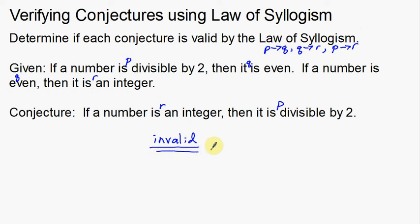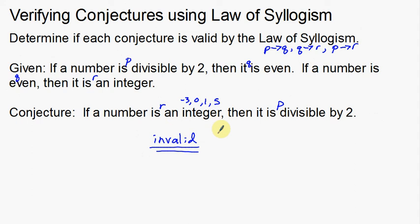That's just the logical progression. But let's also think about it logically. If a number is an integer, then it is divisible by two? Numbers divisible by two are 2, 4, 6, 8, 10, 12 — all the even numbers. But integers include numbers like negative 3, 0, 1, or 5. Right there I've already written examples that are not divisible by two. So negative 3, 1, 0, 5 — none of those divide evenly by two. That tells us this conjecture is not valid.